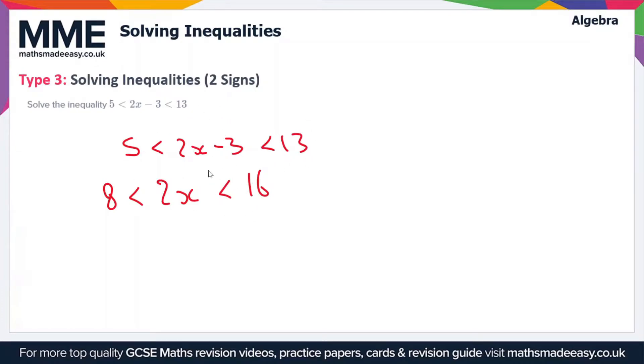And now we want to divide all parts of it by 2 just to get x on its own. So we're going to get 4 is less than x, which is less than 8. So in other words, x is between 4 and 8. And these are strict inequalities, so it does not include the values of 4 and 8.